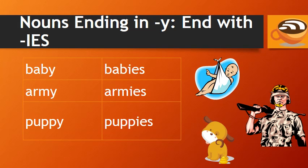For nouns ending in Y, we change the Y to an I and then add ES. For example: baby, babies; army, armies; puppy, puppies.